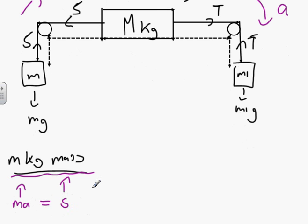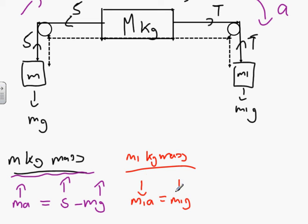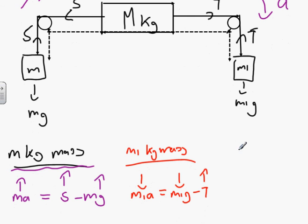Next we're going to migrate onto the m1 mass. What we have here is that m1a going downwards equals m1g going downwards minus your T going upwards. Then finally, we're going to have the M kg mass. Then what we're going to get is Ma equals T minus s.